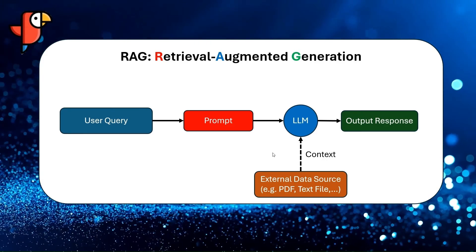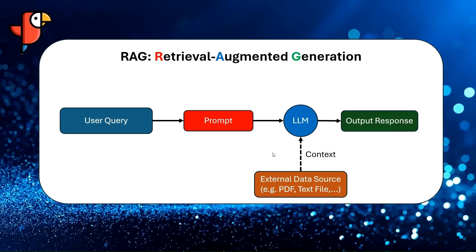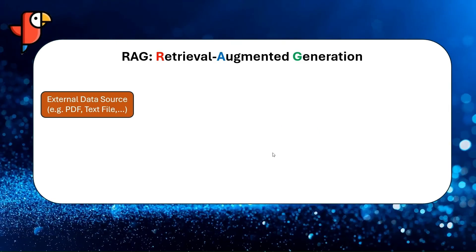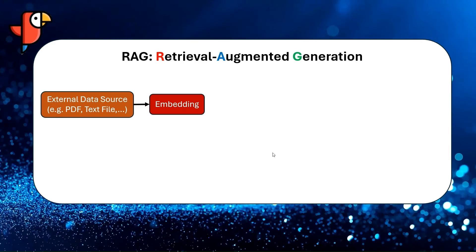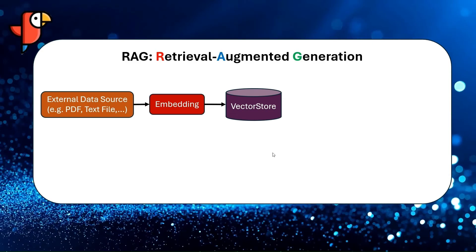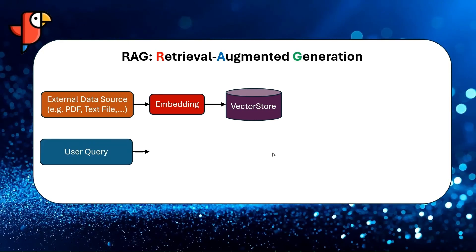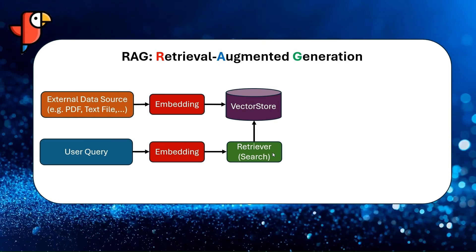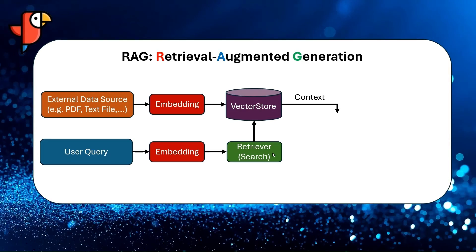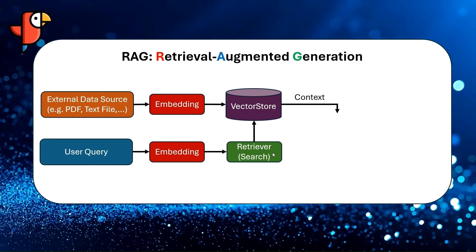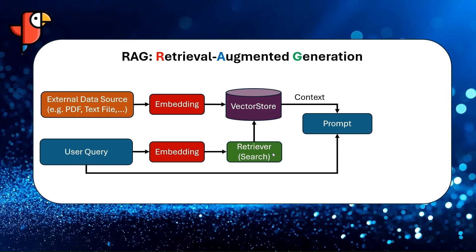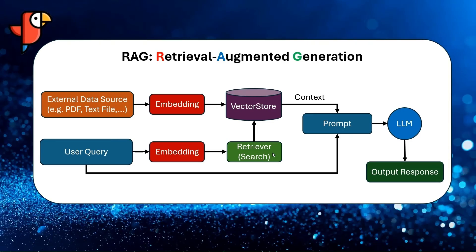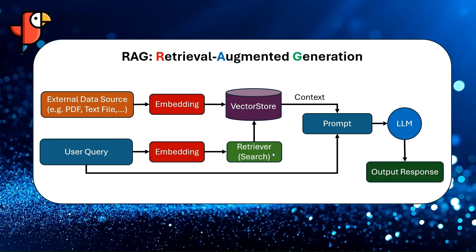Using RAG, context information can be produced for the LLM model from our data. RAG works as follows: our data source, like a PDF file, is first tokenized and passed to an embedding model to get a numerical representation of our data. The embeddings are then stored in a database called a VectorStore. The input query is also embedded similarly. The generated embeddings are then passed to a retriever, which performs a similarity search in the database to find the most relevant information to the input query. This generates our context information. A prompt is then generated using the input query and the context information, which is passed to the LLM model to get its response. Using this framework, we can connect our external data source to our LLM to expand its knowledge.